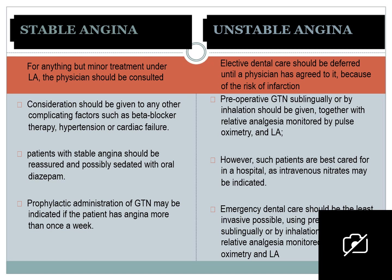For unstable angina, preoperative GTN sublingually or by inhalation should be given together with relative analgesia monitored by pulse oximeter and local anesthetic. Such patients are best cared for in a hospital setting as IV nitrates may be indicated. Emergency dental care should be the least invasive possible, using sublingual or inhalation GTN, relative analgesia monitored by pulse oximeter, and local anesthetic. If a patient is not stable, refer to hospital and to an oral and maxillofacial surgeon stationed there.